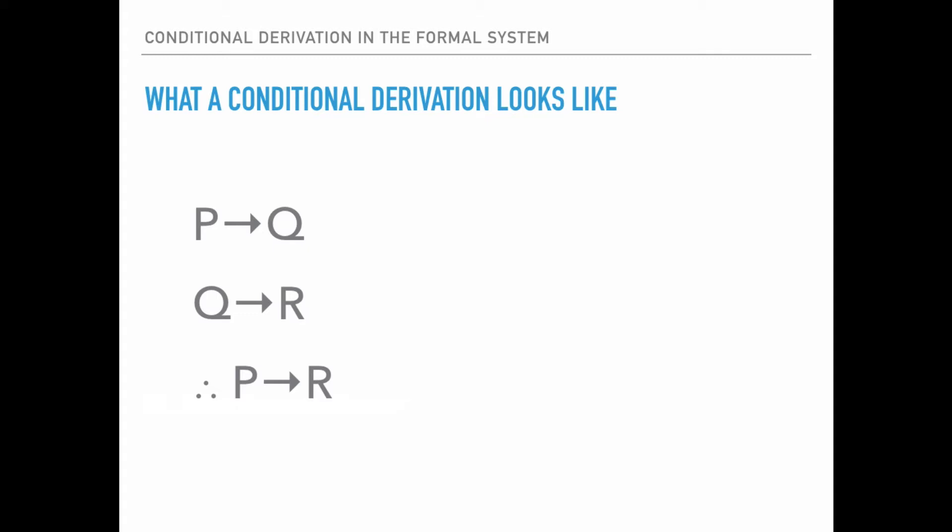To do modus ponens with the first premise, you need P — you don't have P. To do modus ponens with the second premise, you need Q — you don't have Q. To do modus tollens with the first premise, you need not-Q — you don't have not-Q. To do modus tollens with the second premise, you need not-R — you don't have not-R. So you can't do modus ponens or modus tollens with just the premises, and simplification, double negation, and adjunction aren't going to help.